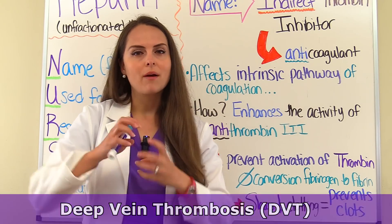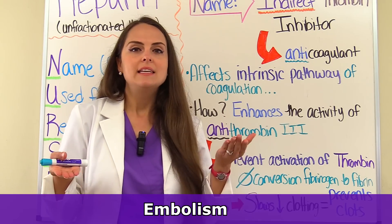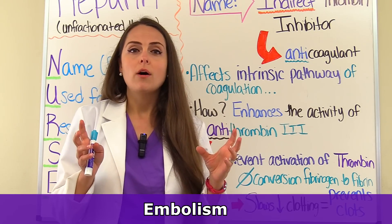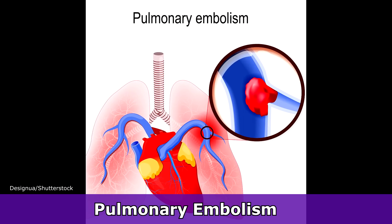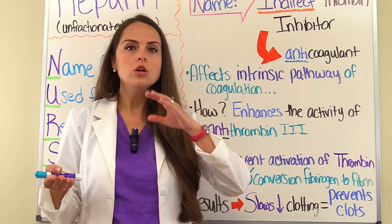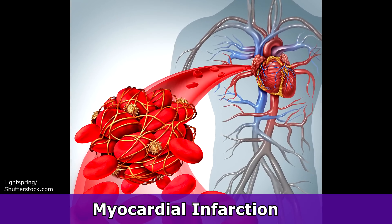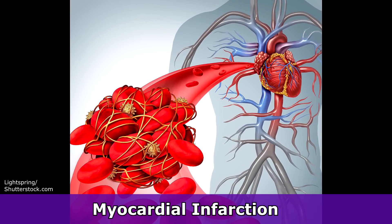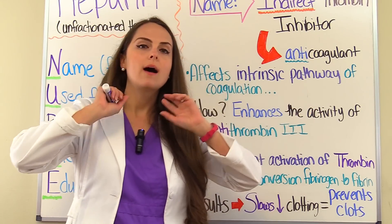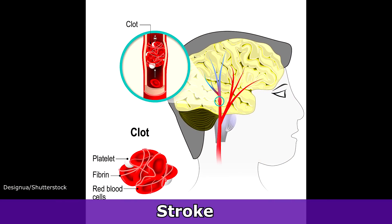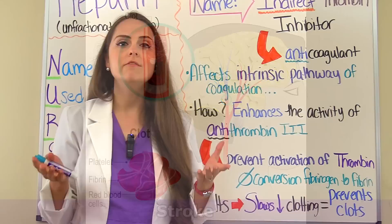These clots can grow, break off, and go into circulation — when they do this it becomes an embolism. These clots can travel throughout the body and cause a lot of problems. They can go to the lungs, where we refer to that as a PE, a pulmonary embolism. Or these clots can go to the heart circulation and block circulation to the heart muscle, causing a myocardial infarction. Or these clots can go through the brain circulation, block blood flow, and lead to a stroke. So these clots can be very dangerous.